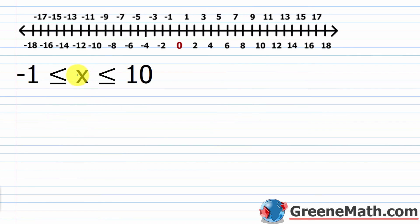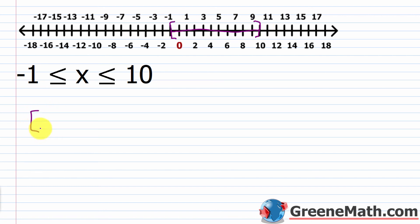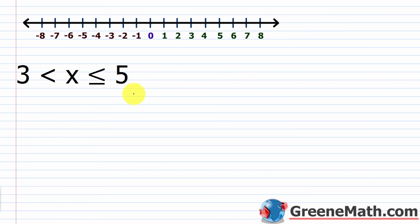For x is greater than or equal to negative 1 and less than or equal to 10: find negative 1, put a bracket facing right; find 10, put a bracket facing left; shade everything between. In interval notation: bracket, negative 1, comma, 10, bracket — written as [-1, 10]. We can also have combinations of brackets and parentheses.